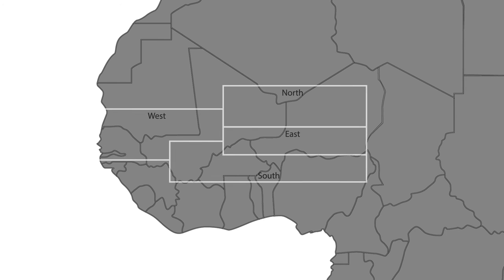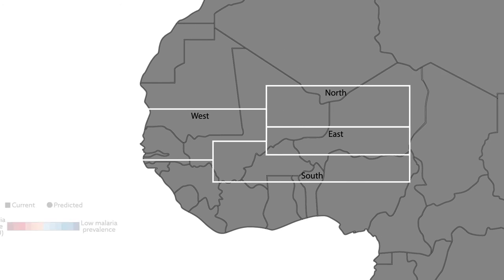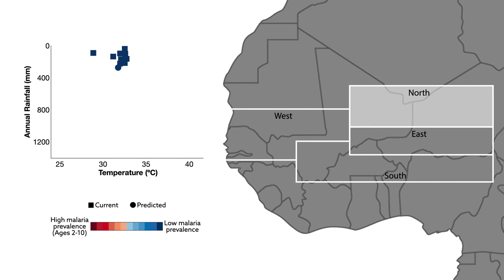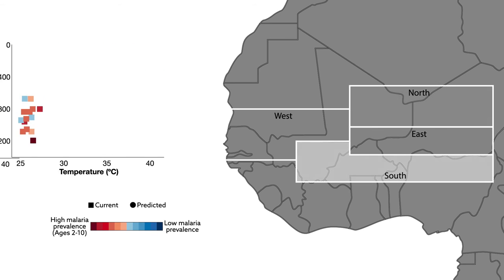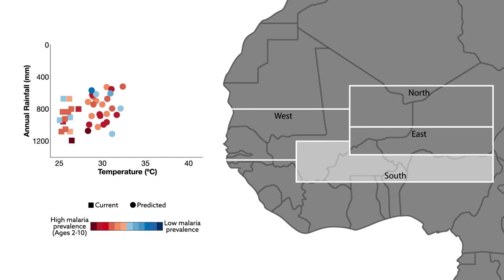So what does the model say? In northern West Africa, it's hot and dry. Although the region will see more rain, it won't be enough to allow mosquitoes to prosper, so climate change is unlikely to impact the number of malaria cases there. Similarly, in the south, temperatures will rise, but not so much that they put a damper on mosquitoes. Malaria is rampant there now and will continue to be.